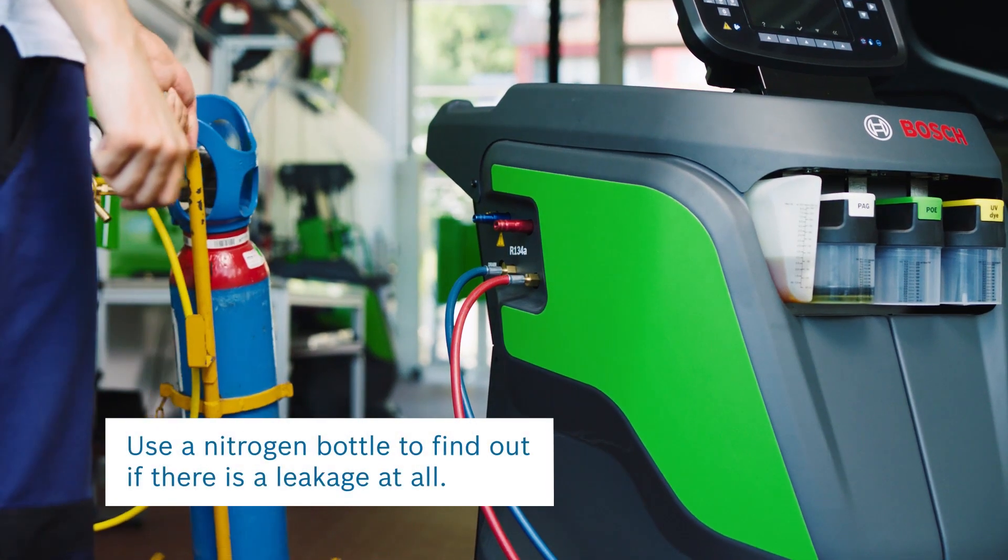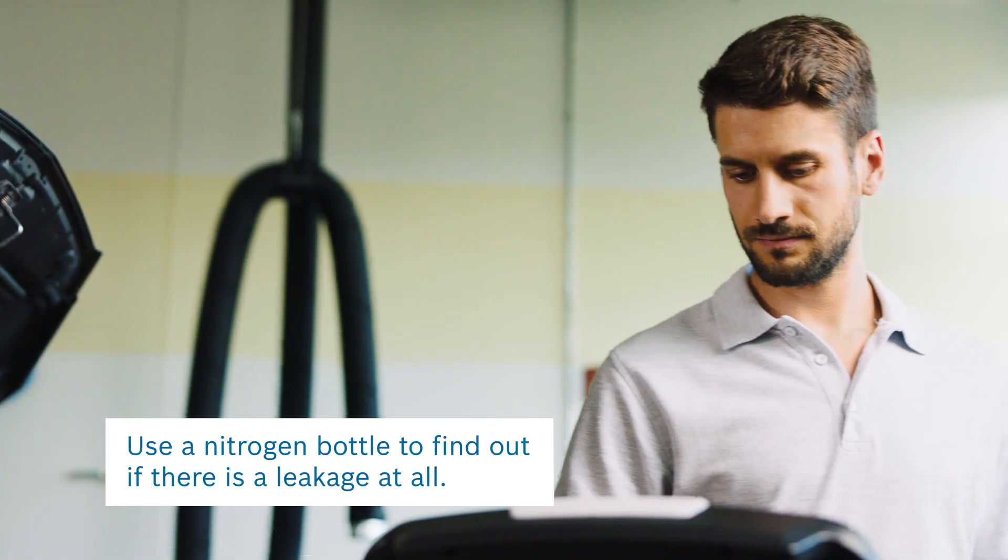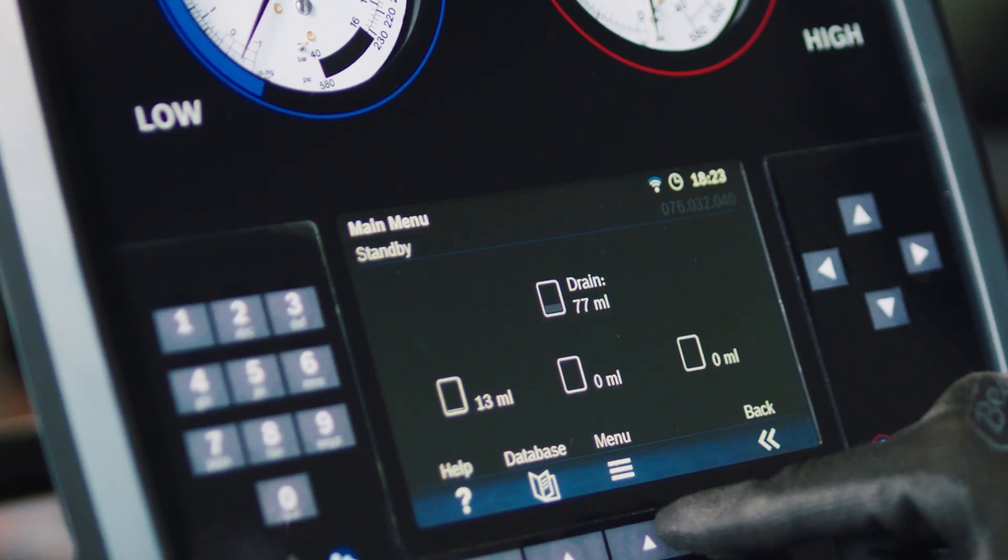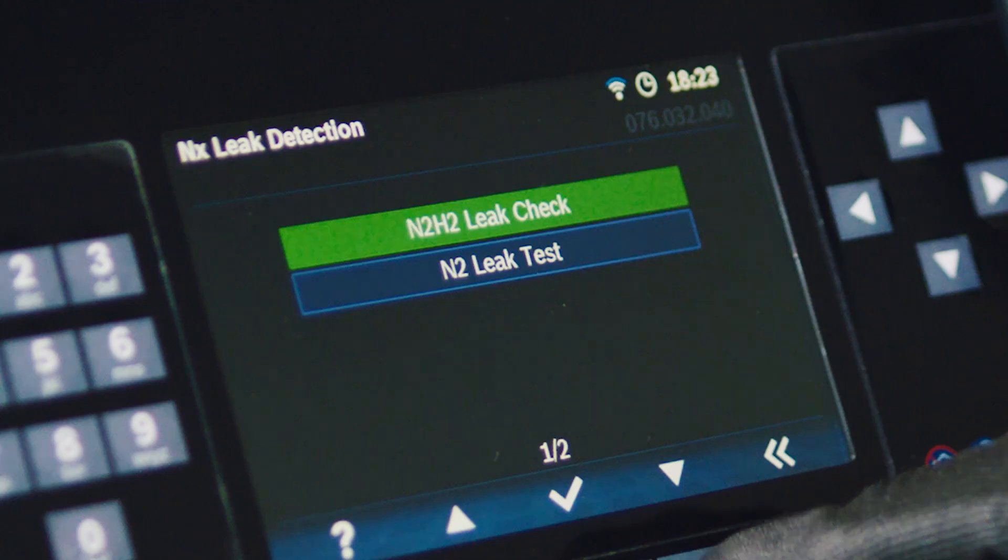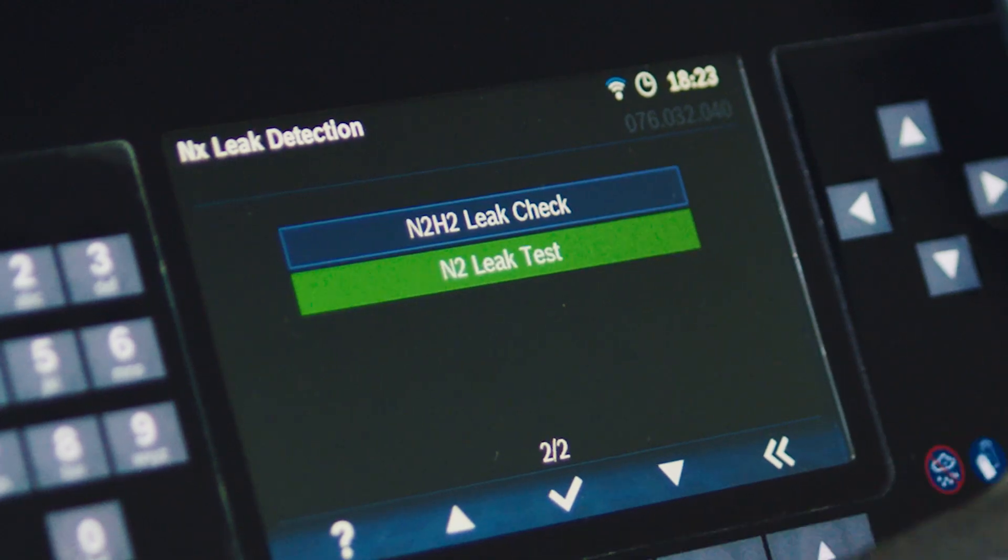Next, use a nitrogen gas bottle to find out if the system is leak-proof. Use the intuitive interface to start the test. The help messages will guide you step-by-step through the menu and to the N2 leak test.